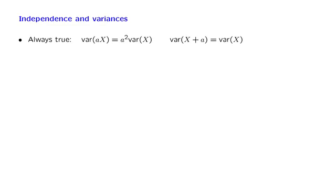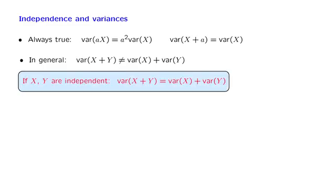Unfortunately, the situation is not so simple, and in general, the variance of the sum is not the same as the sum of the variances. We will see an example shortly. On the other hand, when X and Y are independent, the variance of the sum is equal to the sum of the variances. And this is a very useful fact.